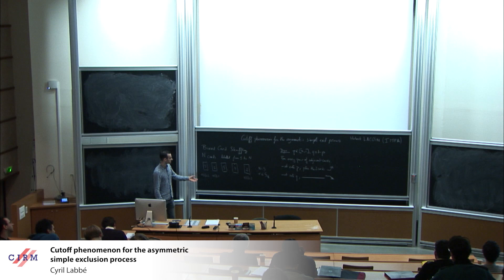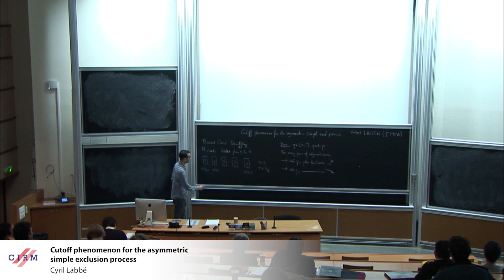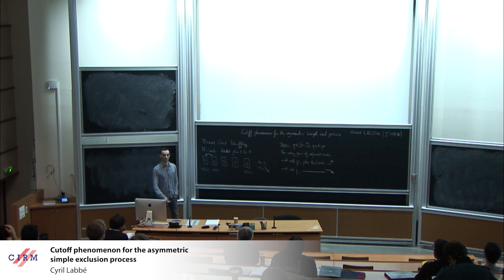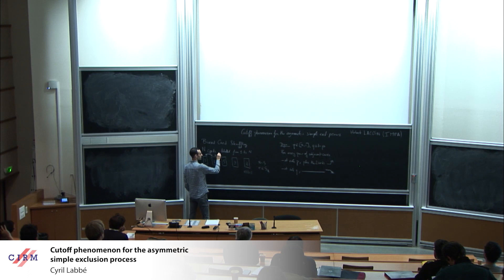At rate p, I place the two cards in increasing order of their labels, and at rate q, I place the two cards in decreasing order of their labels. So for instance, for these two adjacent cards, at rate p I will swap the two cards, and at rate q I do nothing.